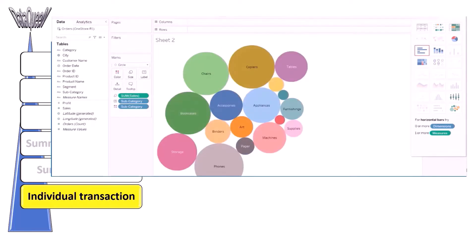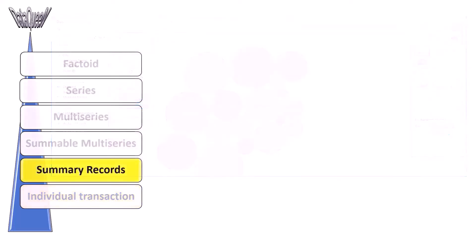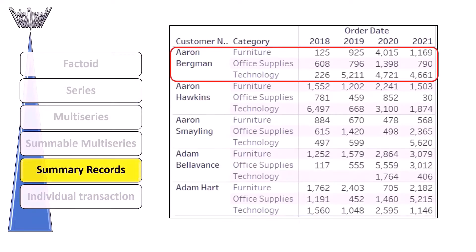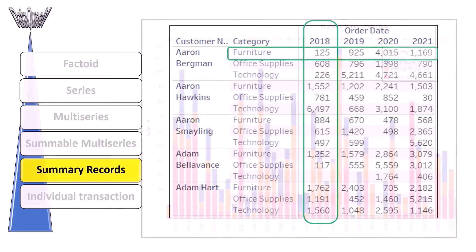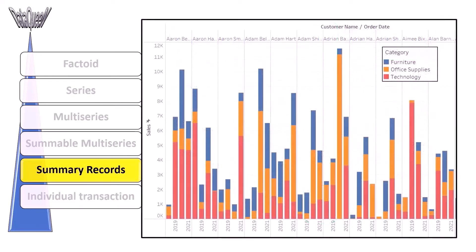The next one is summary records. In this, there is one record for each item in a series. All the transactions of a customer are aggregated in a summary record. Metrics across the series are also aggregated. The items in the summary record can be compared and a certain level of deep analysis can also be performed.